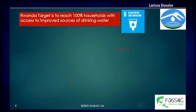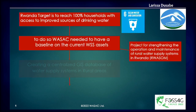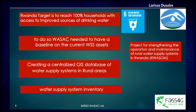To reach 100% access to water for all households, we needed to know the current assets we had. A GIS database was created and all water supply systems were inventoried. This process was supported by the JICA project for strengthening the operation and maintenance of rural water supply systems in Rwanda.